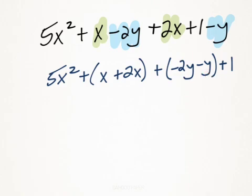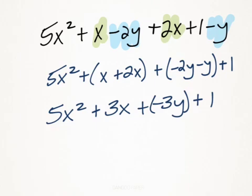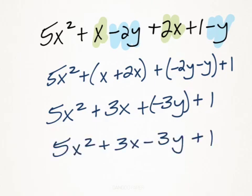So I'll just go ahead and do the arithmetic involved with those. And the solution would be 5x² plus 3x plus negative 3y plus 1. And I can reduce that further down to simply being 5x² plus 3x minus 3y plus 1. So that would be my final solution.